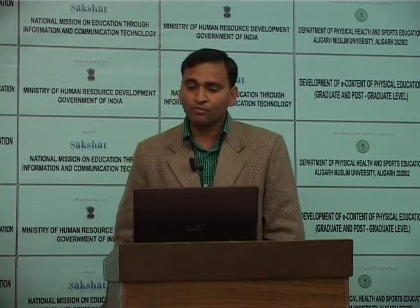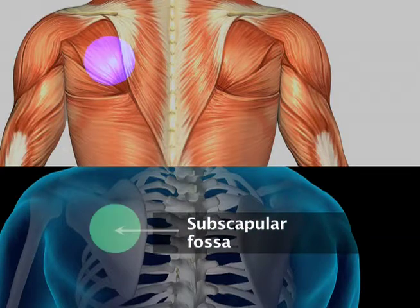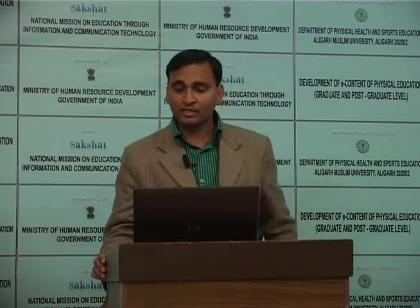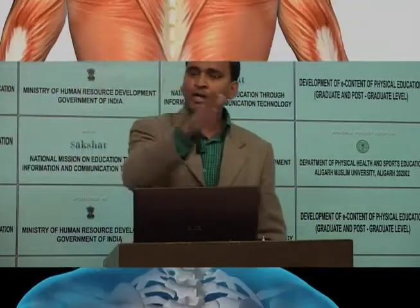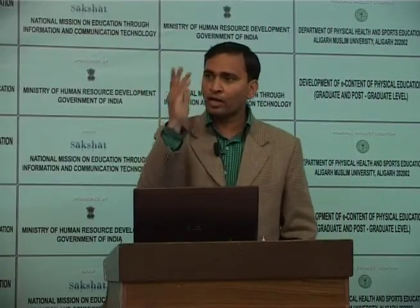The origin of the subscapularis muscle is from nearly the whole of the subscapular fossa of the scapula, and it is inserted over the lesser tubercle of the humerus. This means this muscle connects the scapula to the humerus. By contraction and relaxation of this muscle, it will produce mobility either over the scapula or over the humerus.